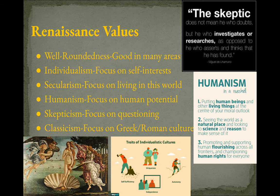Individualism is a focus on the self — your interests and what you want to do. If you want to make art, you should be able to go do that; you don't have to do what your family did. This was usually a privilege of the upper classes who could afford education — the common farmer was still probably farming. Secularism is the idea of focusing on living in this world, not worrying about the afterlife, with some lessening of church power. Humanism holds that humans have a lot of potential — they're logical creatures that can solve problems and don't have to wait for God to solve them.